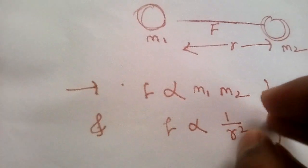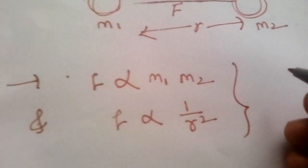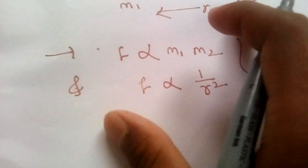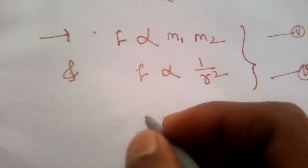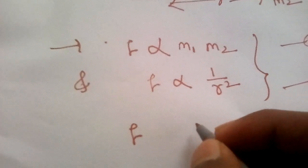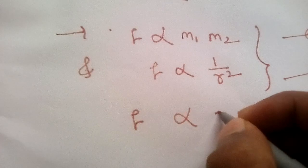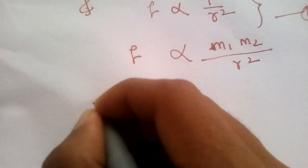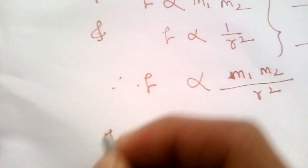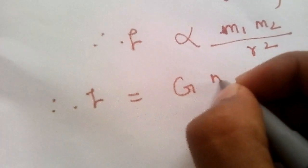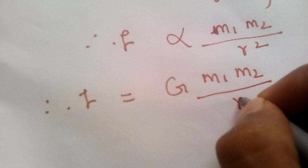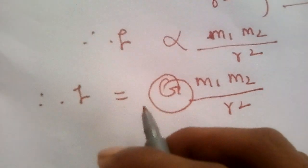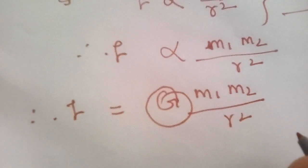For a combination of the two equations, you can write: F is directly proportional to M1 times M2 upon R squared. So F equals capital G times M1 times M2 upon R squared. Here, G is the universal gravitational constant.